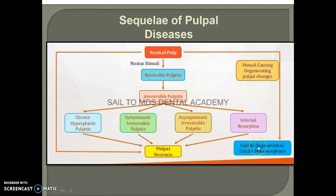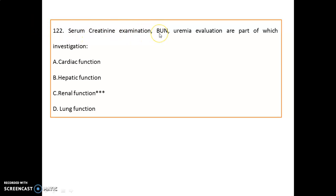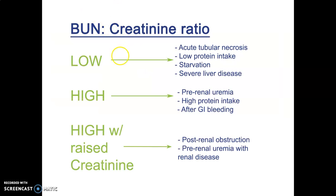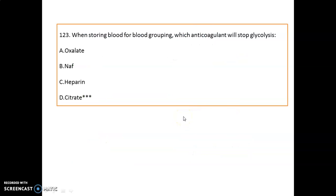Question 122: Serum creatinine, BUN (blood urea nitrogen), and urea evaluation are all part of renal function investigation. The BUN-creatinine ratio is important: it is low in acute tubular necrosis, low protein intake, starvation, and severe liver disease; high in pre-renal uremia, high protein intake, and after GI bleeding. Raised creatinine is seen in post-renal obstruction and pre-renal uremia with renal disorder.